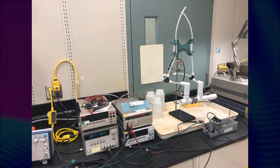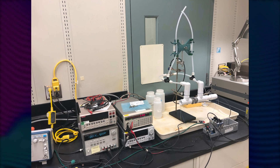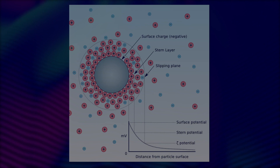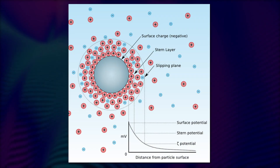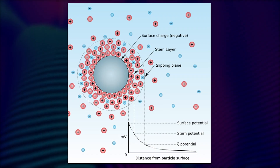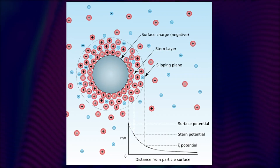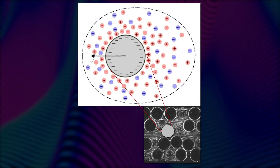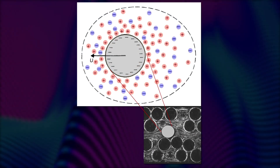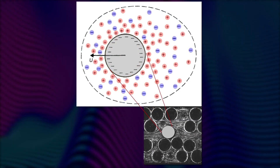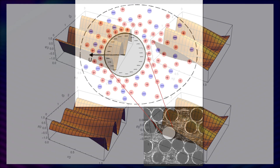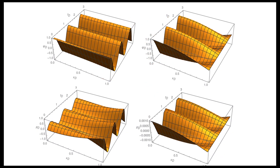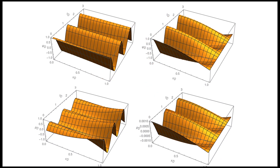It works out to be a neat and tidy thing: you can apply the electric field and measure the pressure response, or you can apply the pressure and measure the electric field response. And you basically take the ratio of the two results and you just get the permeability, which is usually the number that everybody's interested in.